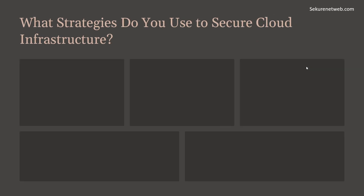Question number five: what strategies do you use to secure cloud infrastructure? Securing cloud infrastructure involves several comprehensive strategies. For network security, use Virtual Private Clouds — design VPCs with subnets, route tables, and network gateways to isolate and protect resources. Implement security groups for instance-level security and network ACLs for subnet-level security to control inbound and outbound traffic. Also adopt zero trust architecture, where no identity is trusted by default and verification is required for every access request.